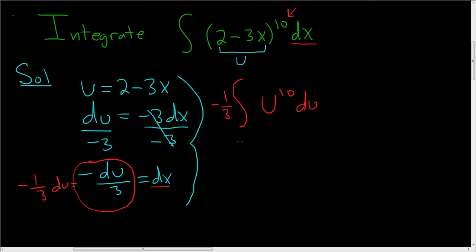Now we can integrate. We'll use the power rule. So this is equal to negative 1/3rd. And we add 1 to the 10, so we get u to the 11th. And we divide that by 11. And this is plus our arbitrary constant.